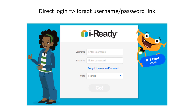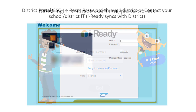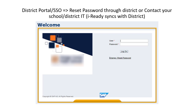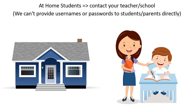So a quick summary to reset your password. If you are a direct logon user and this is what your logon screen looks like, use the forgot username and password link. If you access iReady by logging into your district portal as a single sign-on user, you need to reset your password through the district or contact your school or district IT team. If you are trying to access iReady from home and need to reset your password, contact your teacher or school. We can't provide usernames or passwords to students or parents directly.